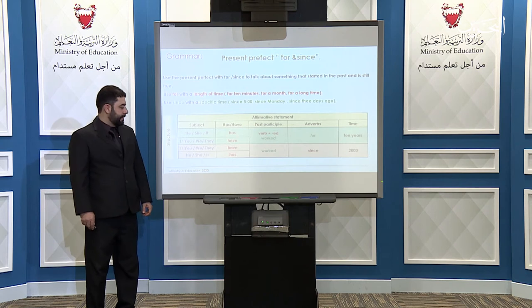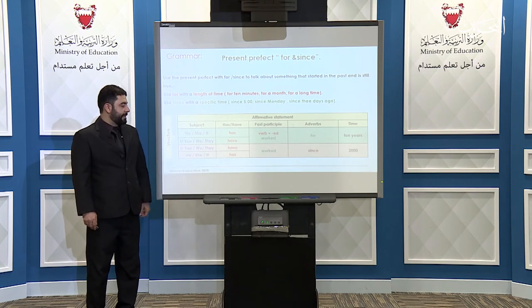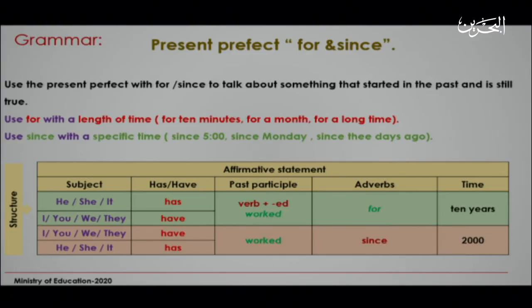You can try different subjects like I, you, we, they. In this case, you have to use 'have' instead of 'has.' For example: They have worked for 10 years. You can also change the adverb to 'since' — since 2000. For he, she, it: She has worked since 2000. Full stop. This is how you form the present perfect.